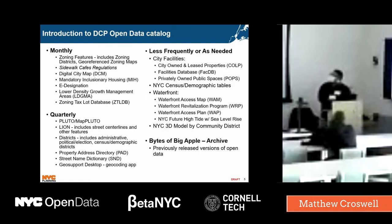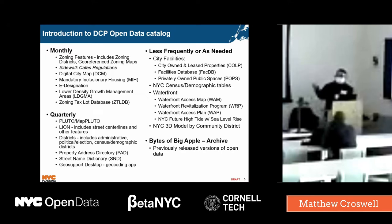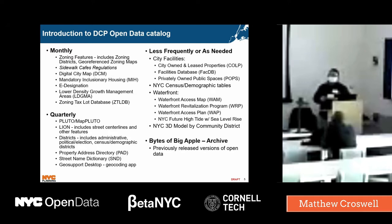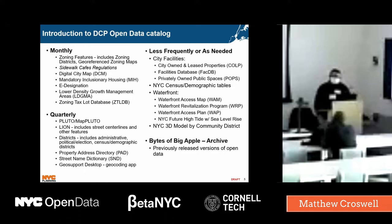In the monthly category, we have zoning features: zoning districts, special districts, sidewalk cafe regulations — which might actually go away now that they've passed legislation to keep the street sheds open. There's also the digital city map, which is featured on the official map of the City of New York. These are the official street names, street widths, parks — you actually have to go through the ULURP process to amend the city map, and all that data is digitized. Other zoning features include inclusionary housing, e-designations, lower density growth management area, and the zoning tax lot database.